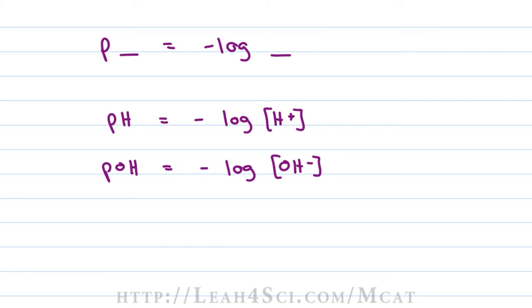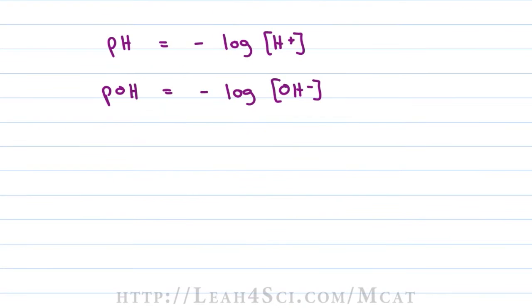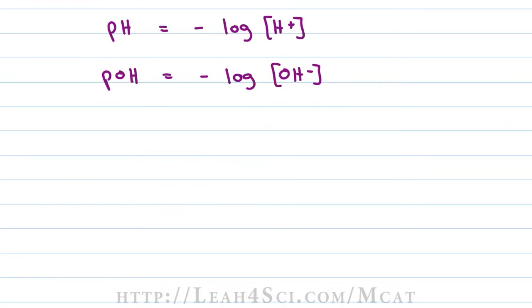However, on the MCAT, you can expect to have to measure bases in both pH and pOH more so than acids will be measured in pOH. That means you have to be comfortable going between them. The two important equations to remember are that Kw is equal to the H+ concentration times the OH- concentration which is equal to 1×10^-14 at 25 degrees Celsius.